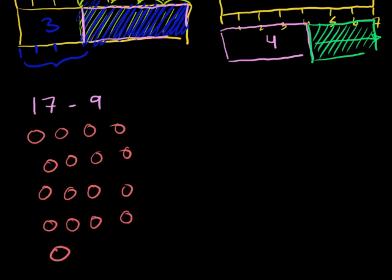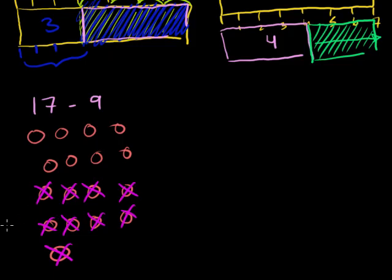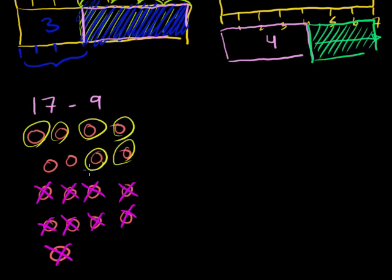And then I'm going to take away 9 of them: 1, 2, 3, 4, 5, 6, 7, 8, 9. How many am I left with? I'm left with 1, 2, 3, 4, 5, 6, 7, 8. So 17 minus 9 is equal to 8.